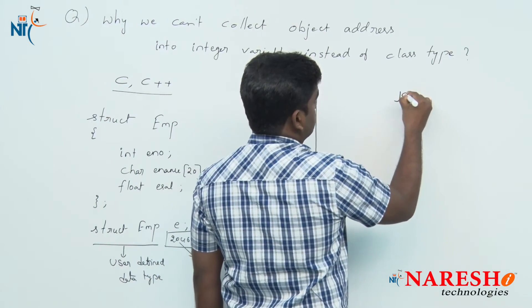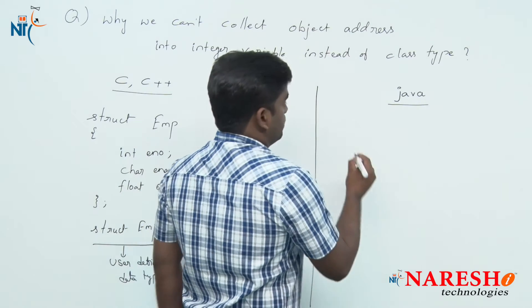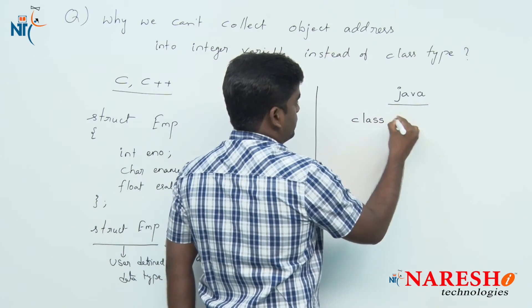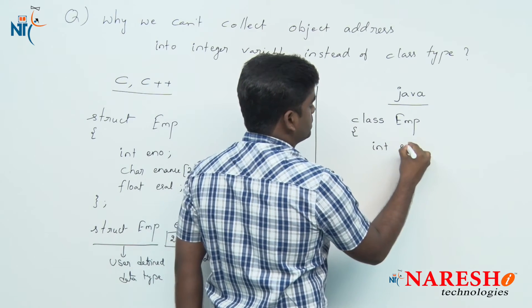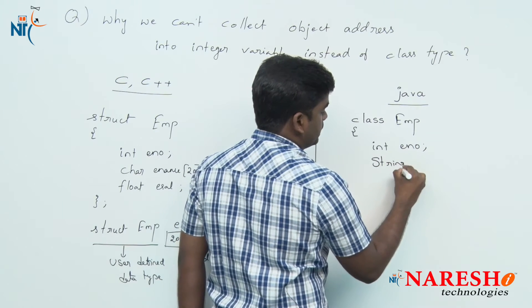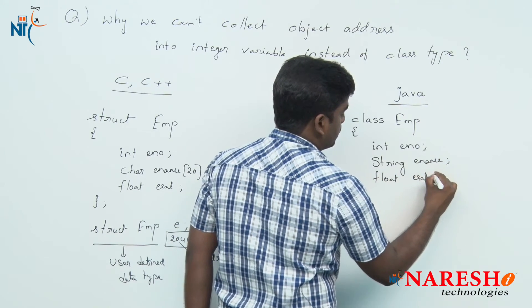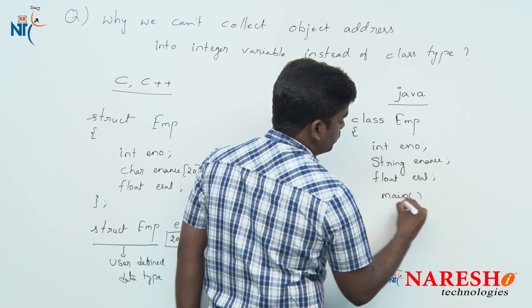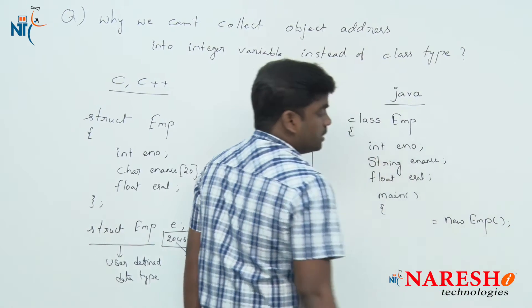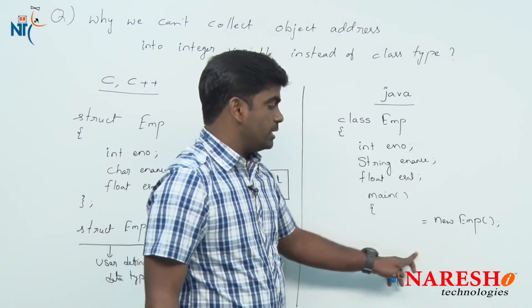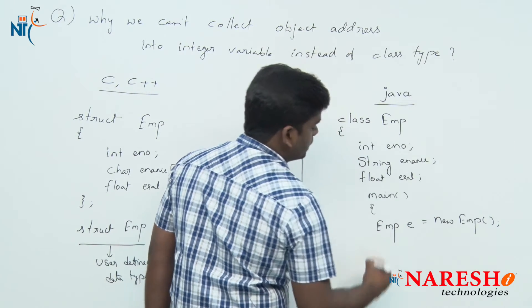Structures in C and C++ are nothing but classes in Java. If it is Java, instead of 'struct EMP' we write 'class EMP' — except that, everything is the same: employee number, employee name as String type, and employee salary. In the main method, we create an object using the new operator, the constructor is called, and the constructor returns that address, which we collect into 'e' — which is of type Employee, not integer.